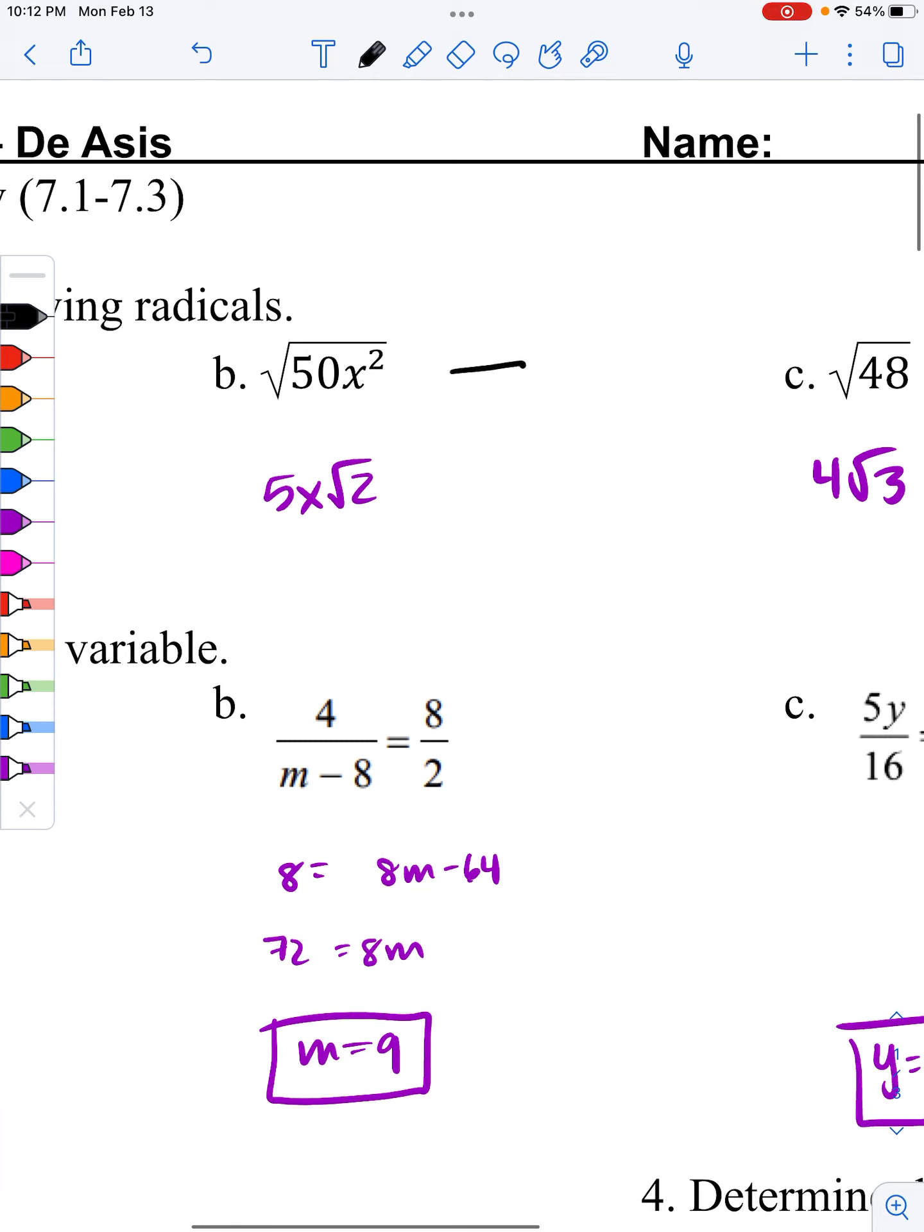Something like this follows the same idea, except this has an x squared. Let's break down the 50 first. That could be broken down into 25 and 2, and 25 is a perfect root, but how does this x squared work? Well, any time you square root a squared, they actually cancel each other out, and that's how you get the x.